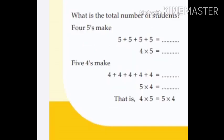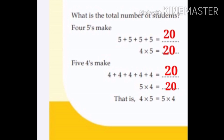Then, what is the total number of students? Yes, four fives make: five plus five plus five plus five is equal to twenty. That is, four into five is equal to twenty. Then, five fours make: four plus four plus four plus four plus four is equal to twenty. That is, five into four is equal to twenty. So, four into five is equal to five into four is equal to twenty.